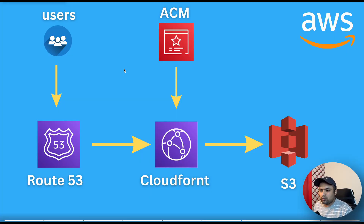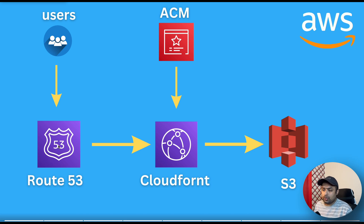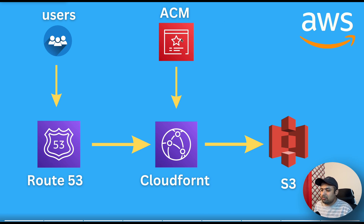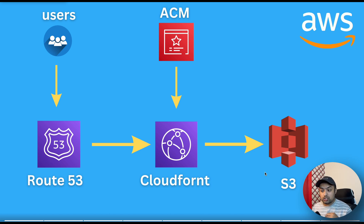First we have to understand how this whole architecture works when we deploy and set up an application on S3 using Route 53 and CloudFront. The user request will come to Route 53, which will send it to CloudFront — a content delivery network that routes traffic to the nearest server location. ACM SSL Certificate Manager is also involved during the request, and then CloudFront fetches the resources from S3 to display to the user.